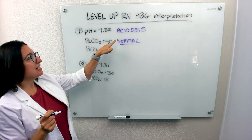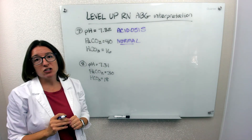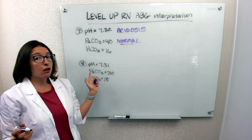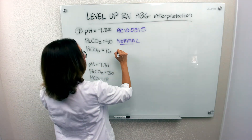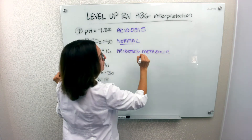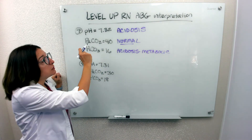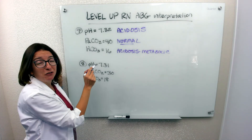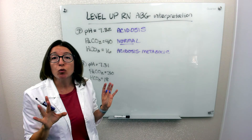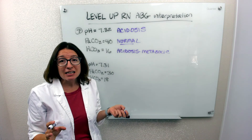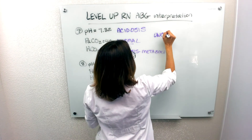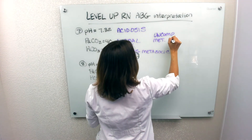Since the respiratory system is normal, it's not causing the acidosis. Looking at HCO3, it should be between 22 and 26, but it is out of range on the low side — so it is causing the acidosis. We have metabolic acidosis. Is the respiratory system trying to compensate? No — it's just in its normal range at 40, not trying to do anything. So in this case, we have uncompensated metabolic acidosis.